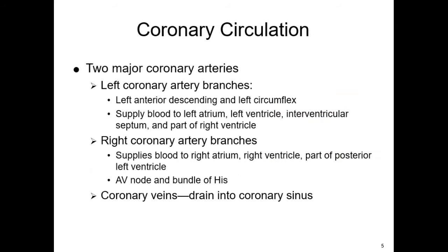The heart needs oxygen just like any other organ, so it is supplied via two major coronary arteries. The left coronary artery (LCA) supplies blood to the left atrium, the left ventricle, the septum, and part of the right ventricle. The right coronary artery (RCA) supplies the right atrium, the right ventricle, and the posterior left ventricle. The AV node and the bundle of His are also supplied by the RCA.